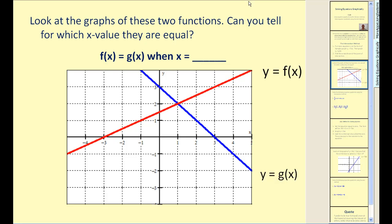Here's the idea — can you tell on this graph for which x-value the two functions are equal? Here we have a graph of f(x) and a graph of g(x). Here's the point of intersection, and the x-coordinate of this point represents the solution, so x = 1 would be our solution.